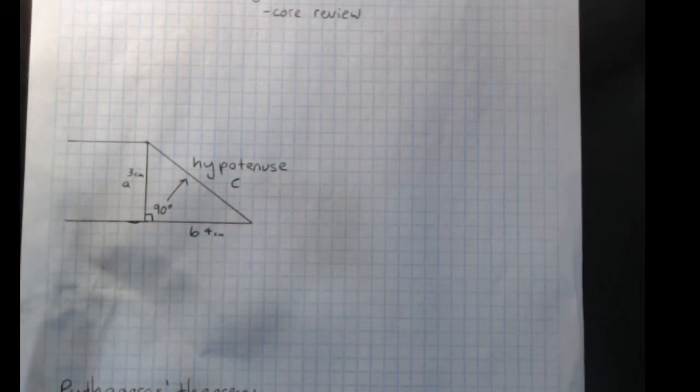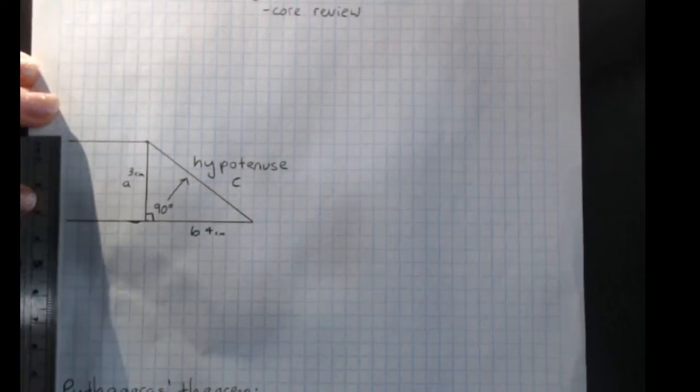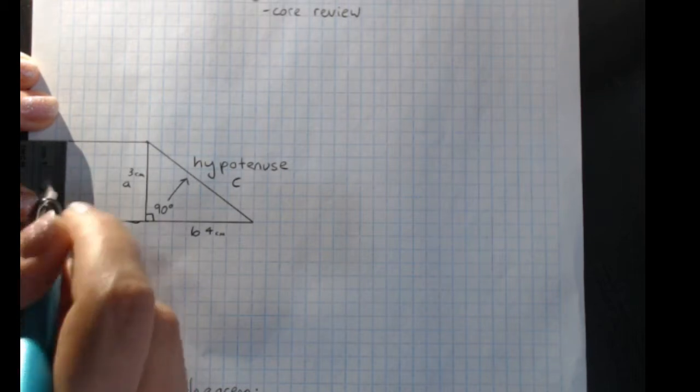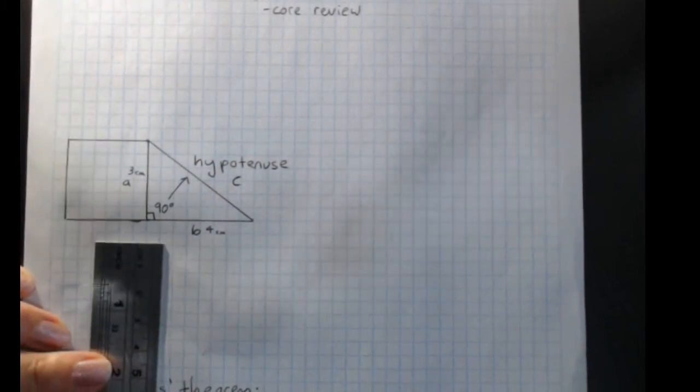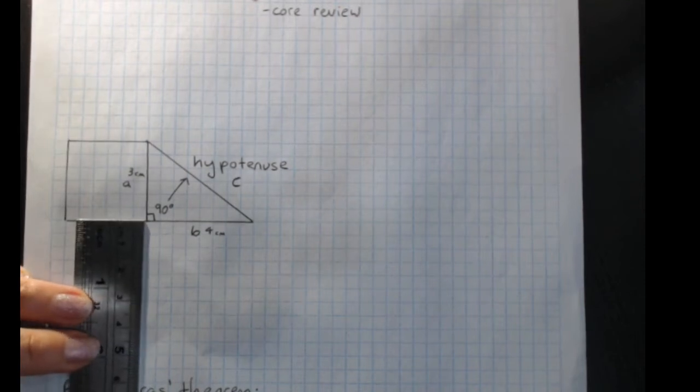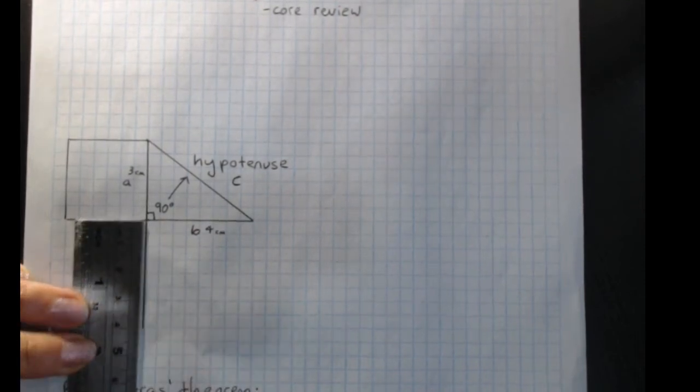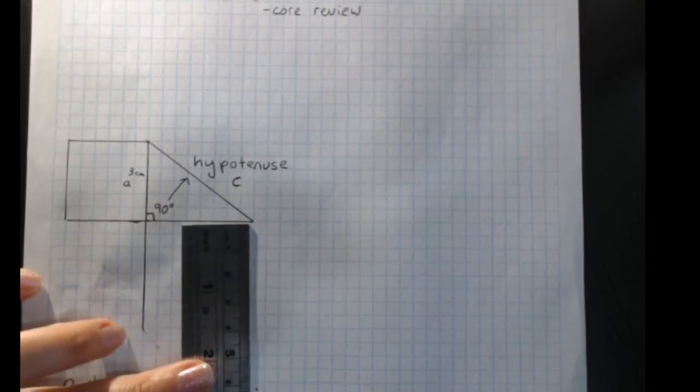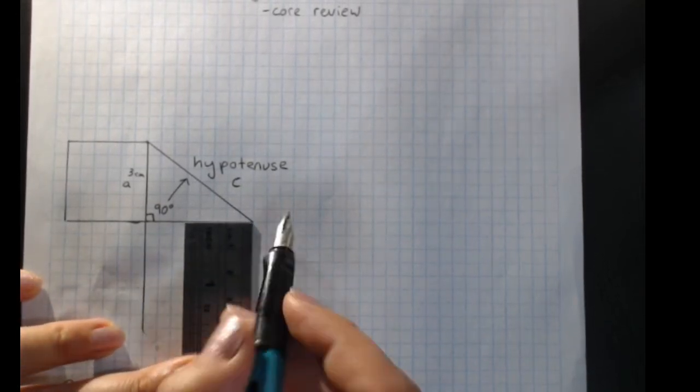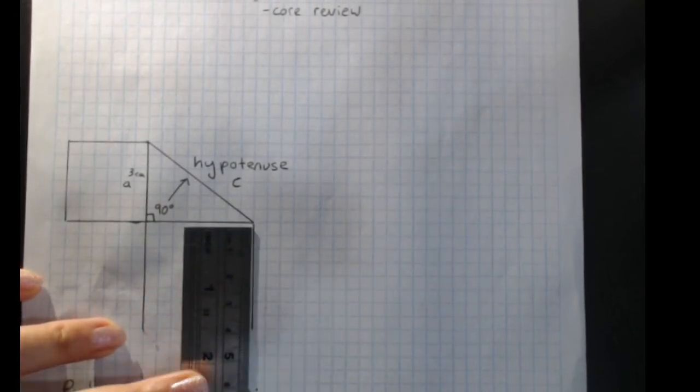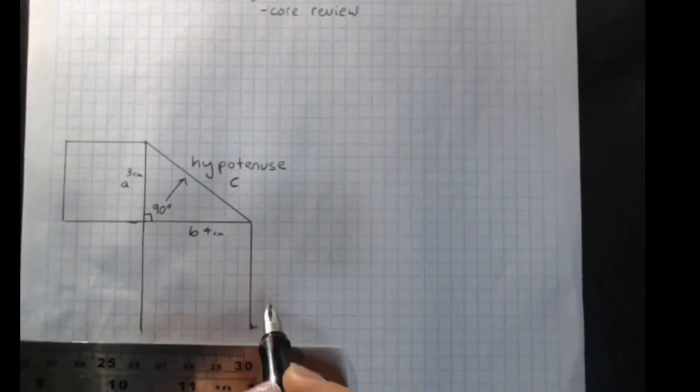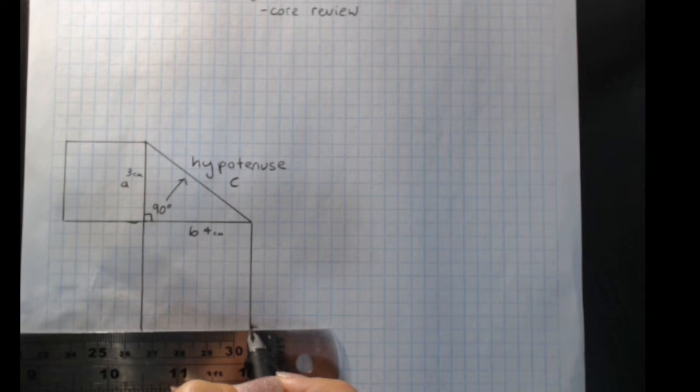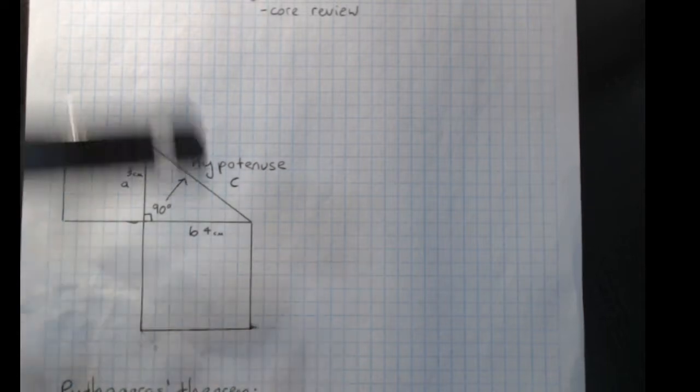I can use a ruler, there we go. We've got a three centimetre one over here. We'll make a four centimetre one here. If we find the areas of those squares that we've just drawn, counted in centimetres squared, or metres squared, or whatever it is...